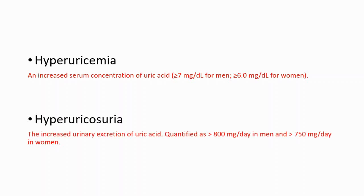The second cause is hyperuricosuria. Hyperuricosuria is increased urinary excretion of uric acid, quantified as over 800 mg/day in men and over 750 mg/day in women.